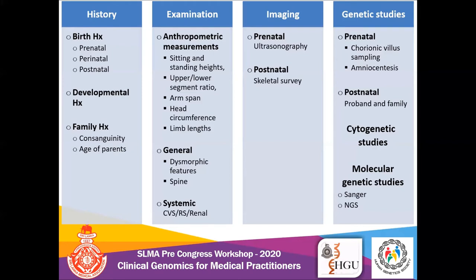If there is a probable diagnosis which needs confirmation, we can directly request molecular genetic studies. Otherwise, if there is developmental delay and congenital malformation, we go for cytogenetic studies like chromosomal microarray and karyotyping. When there is only a single gene to be tested, such as in achondroplasia, single gene sequencing is enough most of the time. But when there are multiple disease-causing genes, we have to go for next generation sequencing.